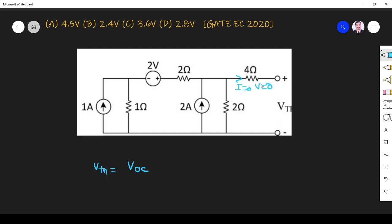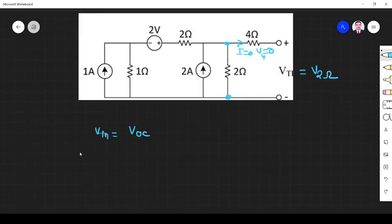So voltage here is 0. Voltage across 4 ohm is 0. So if you find what is the voltage across this terminal the same voltage occurs here that is your Vth voltage. So Vth is nothing but voltage across 2 ohm. That's what we are going to do.